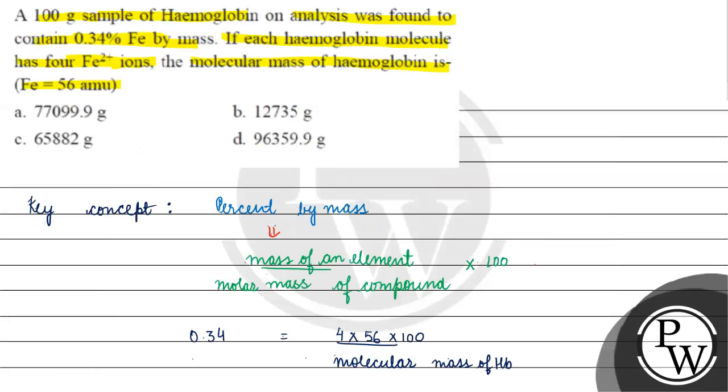By molecular mass of hemoglobin equals 56 into 4 into 100 by 0.34. This will come out to be 65,882.353 gram per mole. Coming back to the question, correct answer for this question will be option C. I hope you understood it well, thank you and all the best.